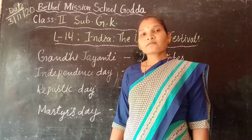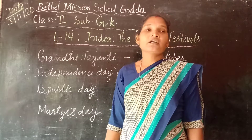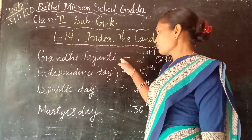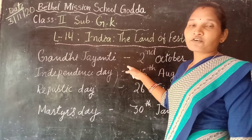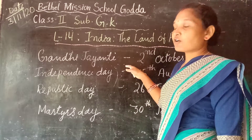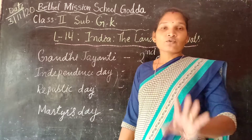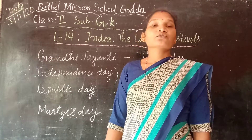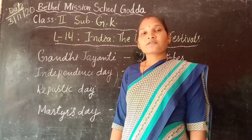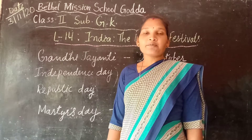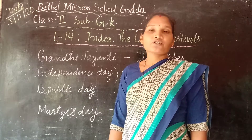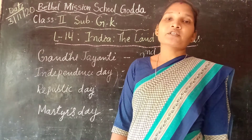So children, please don't forget the national festivals and their dates. Gandhi Jayanti is on 2nd of October, Independence Day is on 15th of August, and Republic Day is on 26th January. These three important dates you have to remember. Thank you.